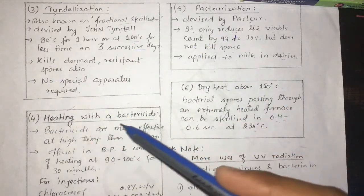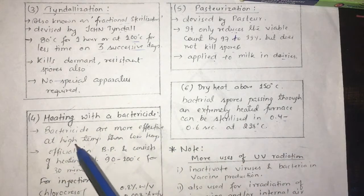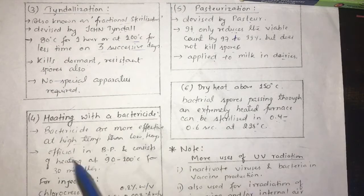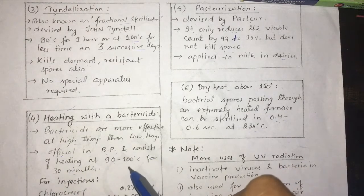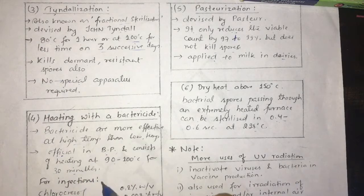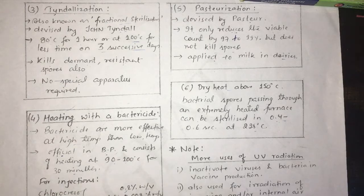Heating with bactericides: bactericides are more effective at high temperatures than low temperatures. This consists of heating at 90°C to 110°C for 30 minutes for injections. Examples of bactericides used include chlorocresol 0.2% w/v, phenylmercuric nitrate 0.002% w/v, benzalkonium chloride 0.1%, and thiomersal 0.1% w/v.